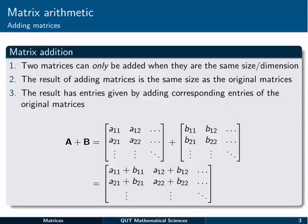First of all, matrix addition. Two matrices can only be added when they have the same size or dimension. So for example, a 3×4 matrix and a 3×4 matrix can be added. But if you tried to add a 4×3 matrix to a 3×4 matrix, you couldn't do that.